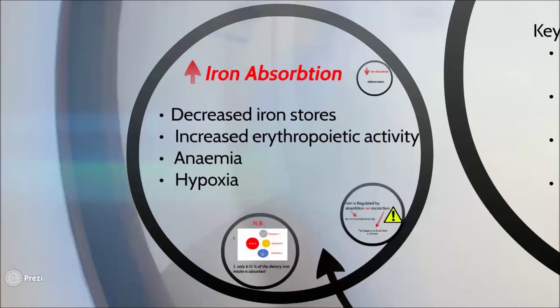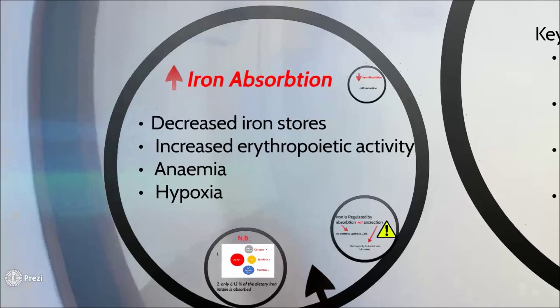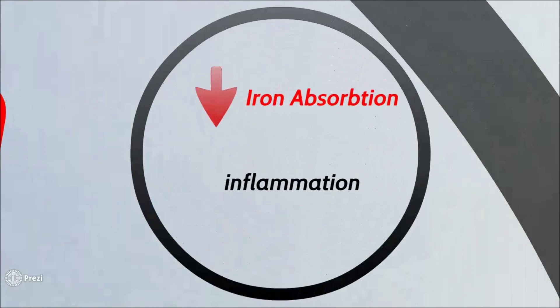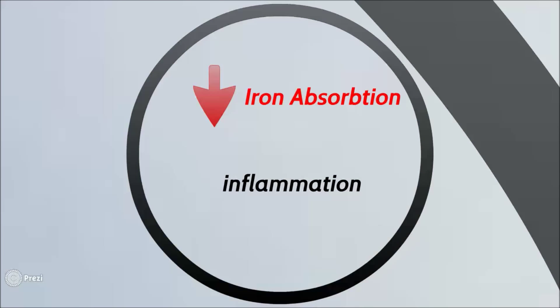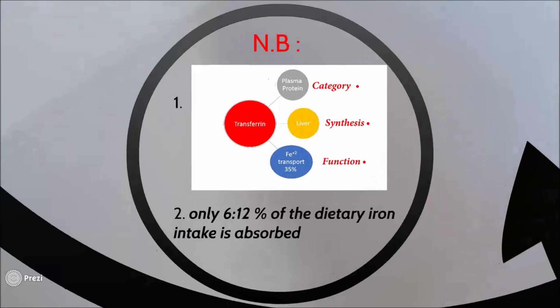Iron absorption is affected by physiological and pathological factors. It increases in cases of anemia, hypoxia, decrease in iron stores, and increase in erythropoietic activity. The major factor that causes a decrease in iron absorption is inflammation.